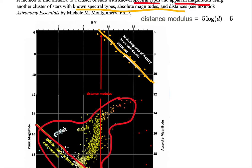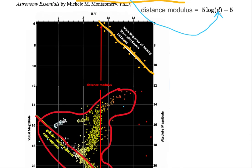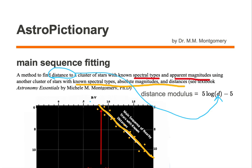This difference in magnitudes is called the distance modulus, and from this distance modulus we can find distance using this equation. Distance modulus equals 5 log d minus 5. We solve for d and we can find the distance to this cluster of stars. This technique is called main sequence fitting.